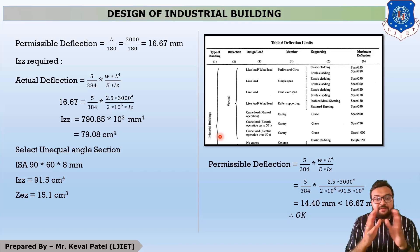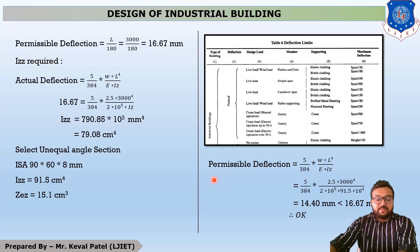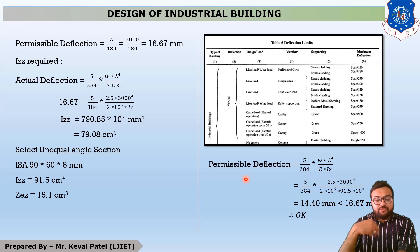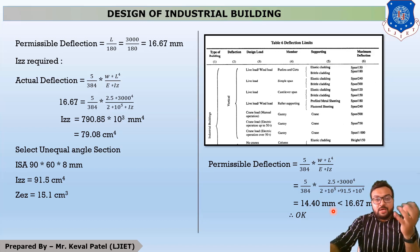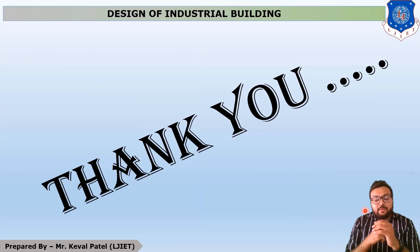Now we must check whether our selected section is safe in deflection. The equation remains the same, but we substitute Izz = 91.5 cm⁴, converted to 91.5 × 10⁴ mm⁴. After calculating, our actual deflection is 14.40 mm. This 14.40 mm is less than our permissible deflection of 16.67 mm, so our section is safe in deflection.